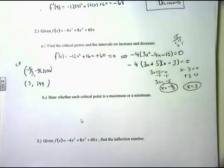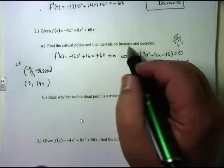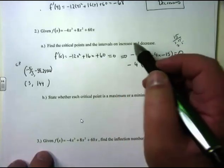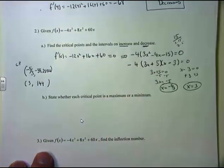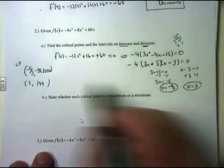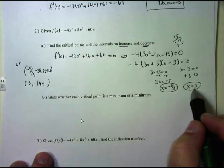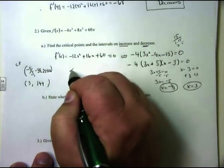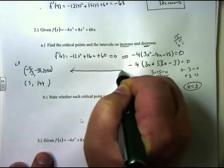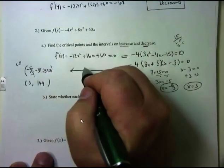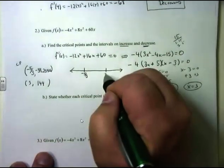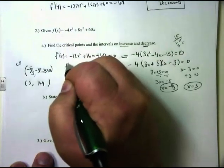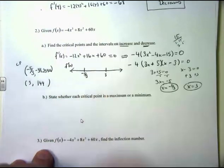So these are my critical points — I gave you both the x and y coordinates. Now they want me to find the intervals of increase and decrease. Once you've got the critical numbers at -5/3 and 3, to find intervals of increase and decrease, you draw yourself a number line and label your critical numbers in order. This number line will represent the first derivative.